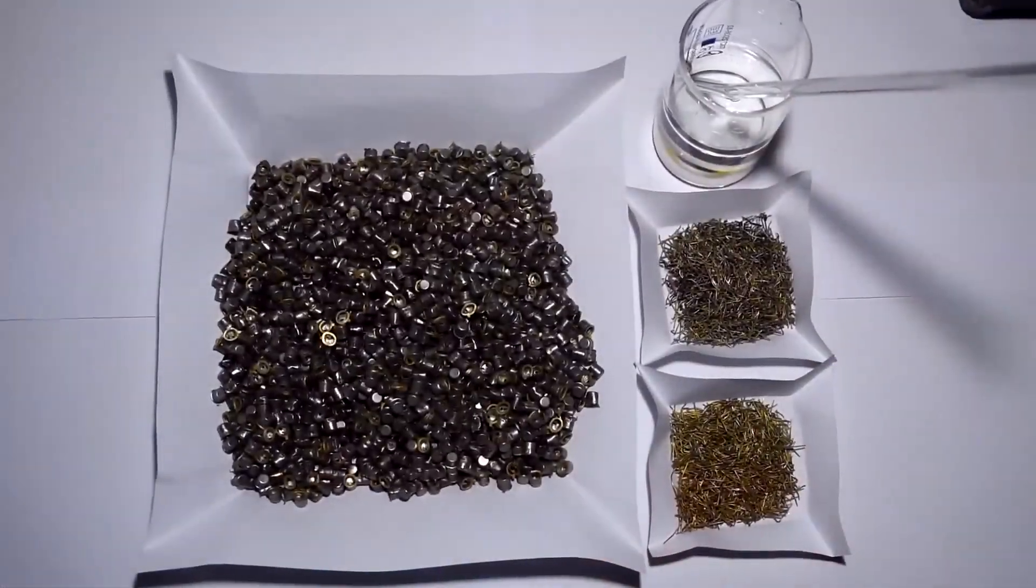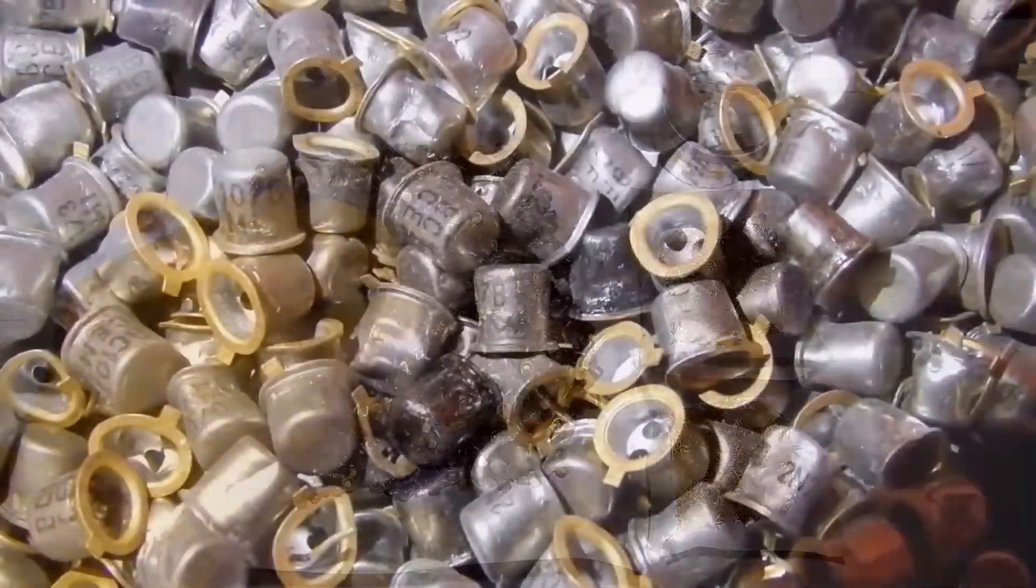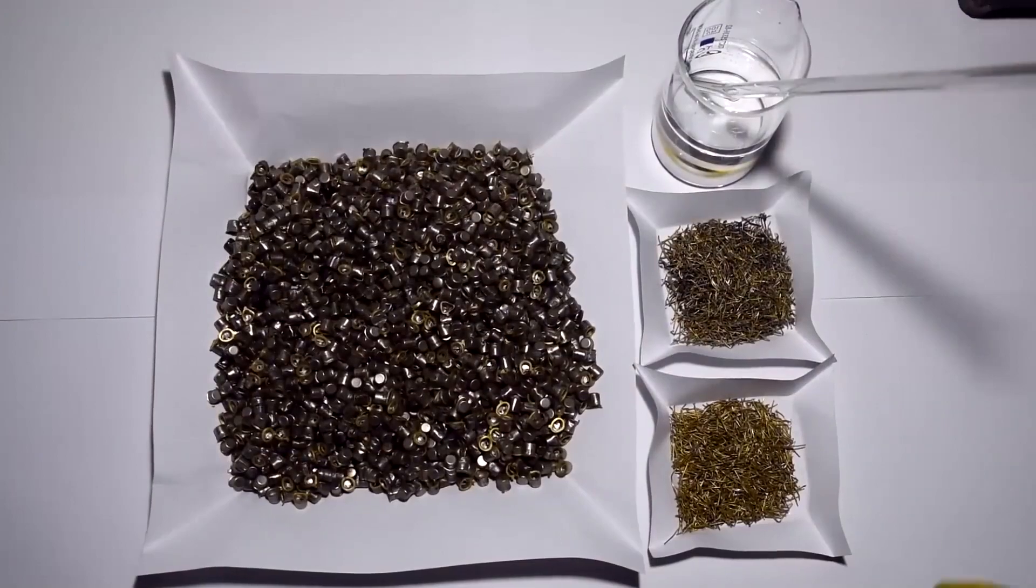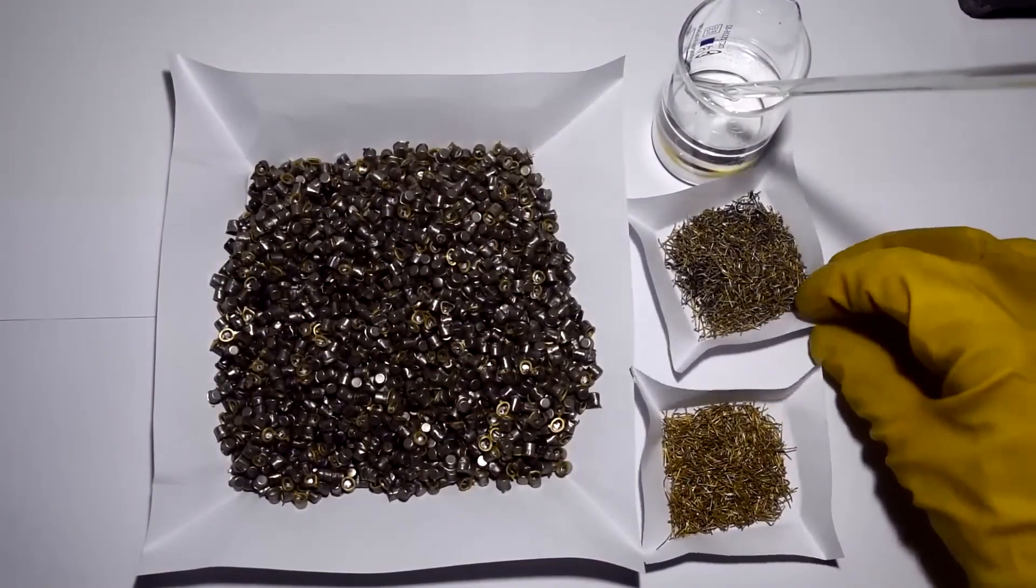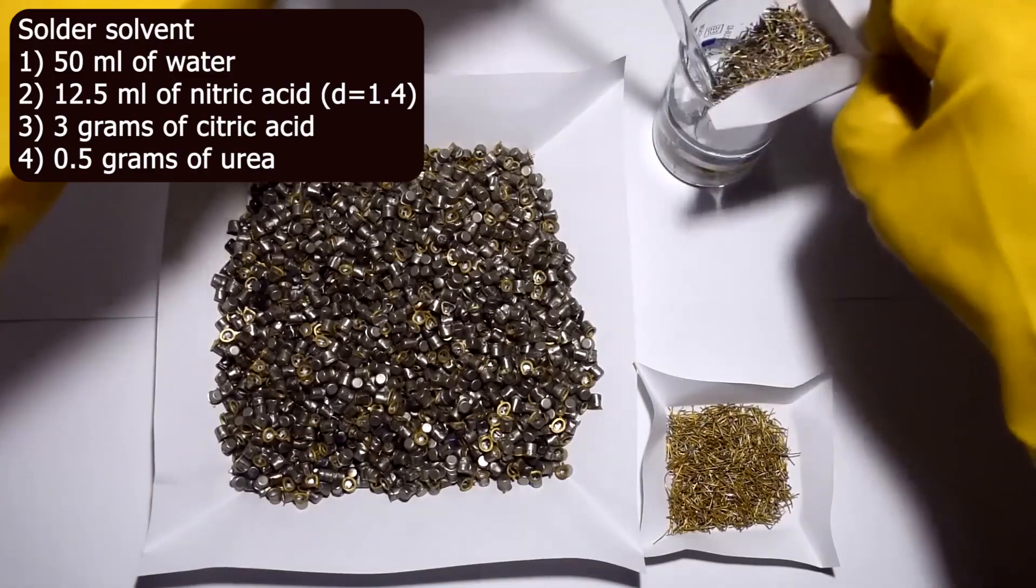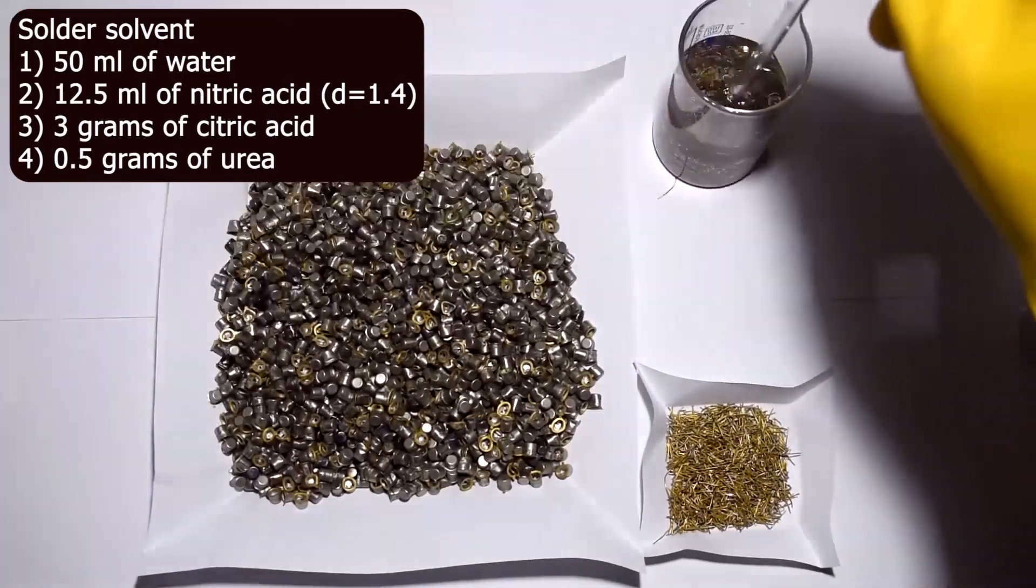I gutted the transistors. As a result, these are the gold-plated caps and conclusions. Conclusions in general, 49 grams. This is the part with solder. So I immediately pour it into the solder thinner, which I prepared 60 milliliters.